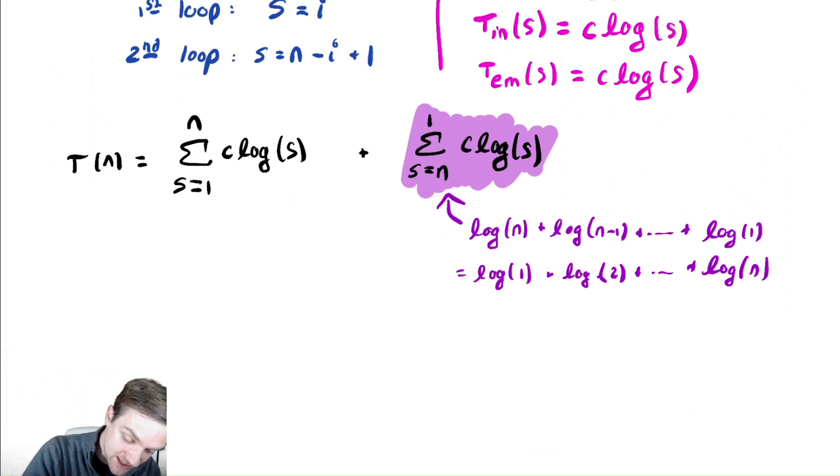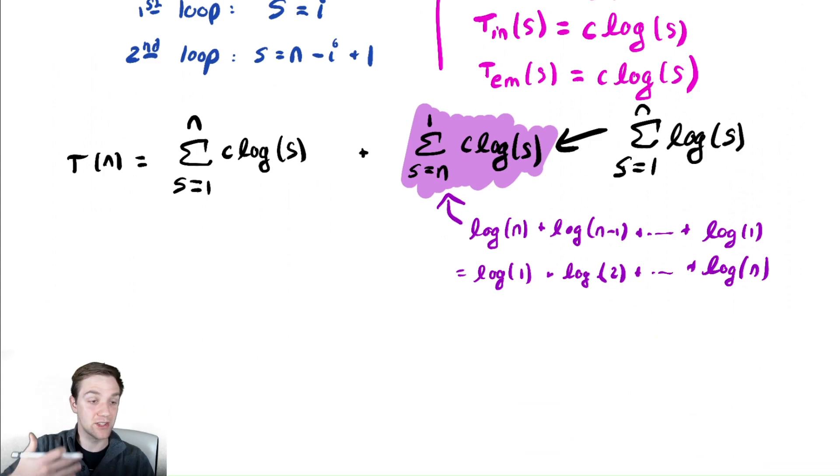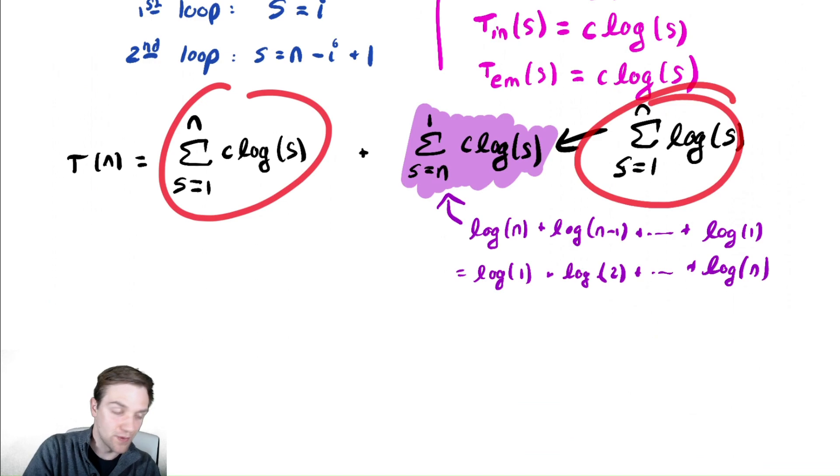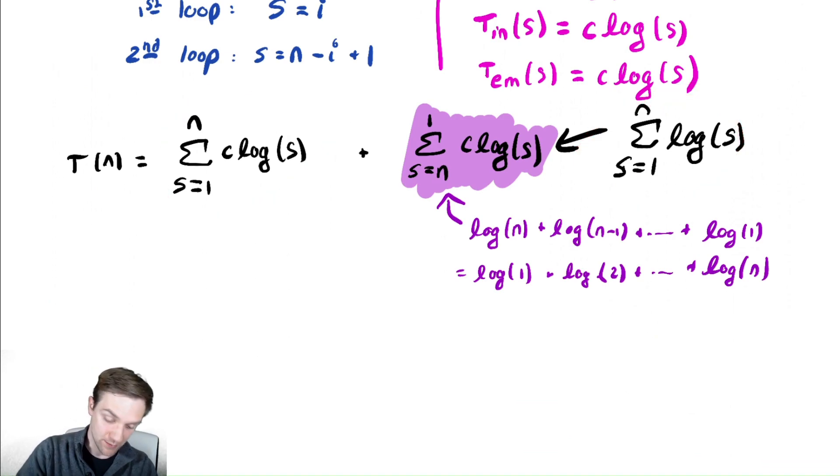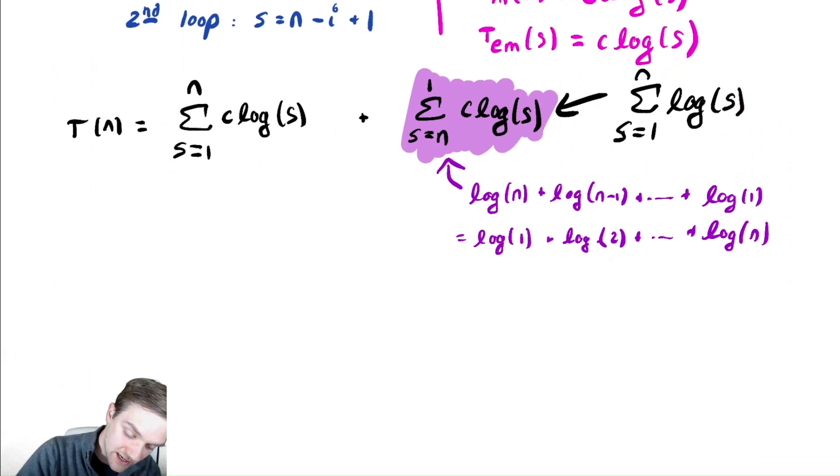So, I can rewrite that second summation as the sum from s equals 1 to n of log of s. That's just rewriting the terms of the summation. And notice that these two summations are the same. So, if I can analyze one of them, I can analyze both of them. So, let's try and analyze that summation.